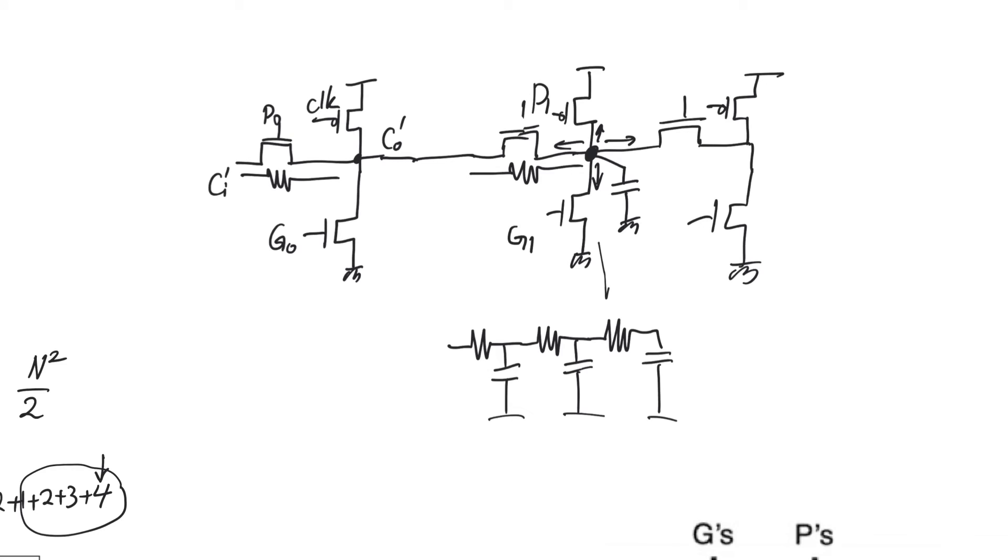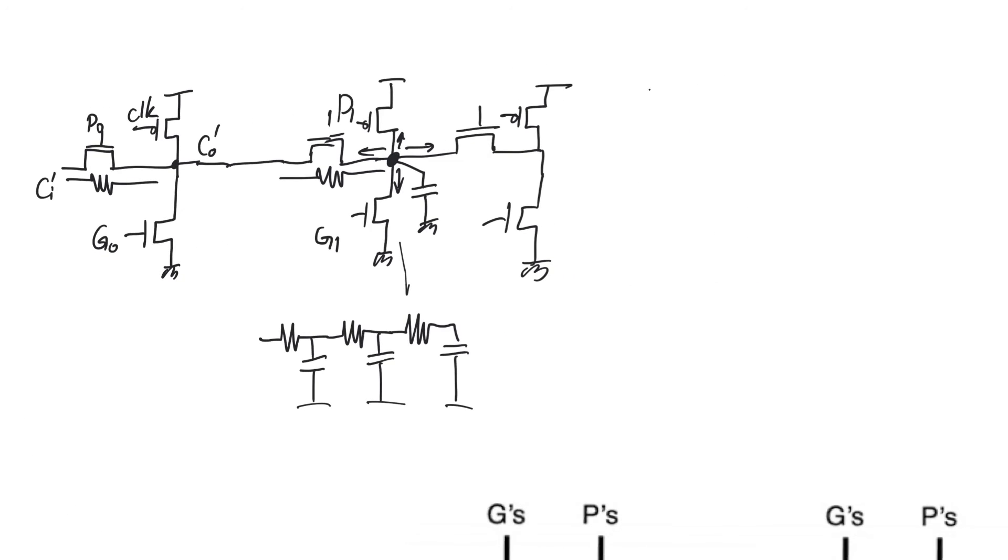You don't want quadratic delay because quadratic delay increases real quick. But the good thing about the Manchester carry chain is that it is very simple. And so it has a low y-intercept. When you look at the ripple carrier, there are two things: there's the slope and there's also the y-intercept.